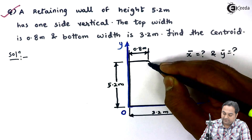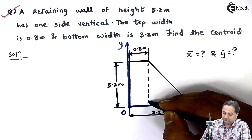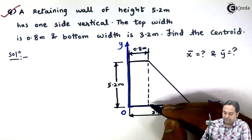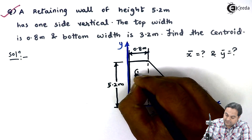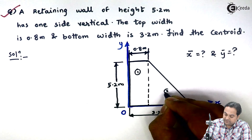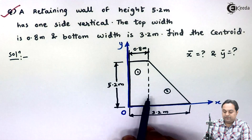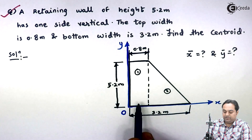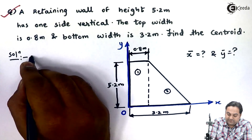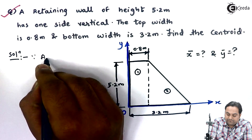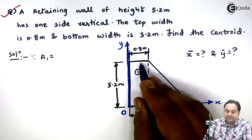If I draw a vertical line here, this retaining wall gets divided into two sections: the first one is a rectangle and the second one is a triangle. So I will find the centroid by considering it as a combination of a rectangle and a triangle.